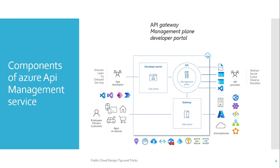Now let's try to understand the different components of Azure API Management Service. It has three major components: API Gateway, Management Pool, and Developer Portal. Whenever a request lands in Azure API Management, it lands in the API Gateway. From the API Gateway, it interacts with API Management, which then connects to your various Azure services. There is also a Developer Portal where developers can do governance of the APIs, discover, learn, and try out new things.